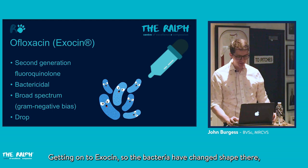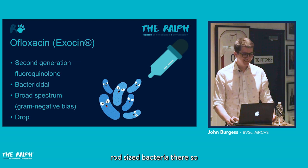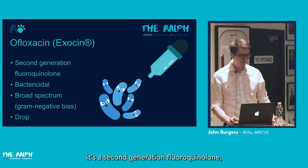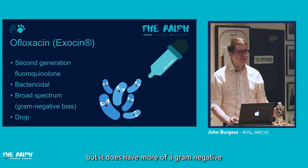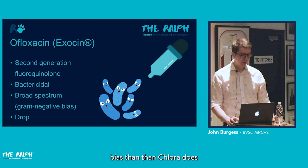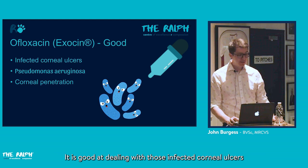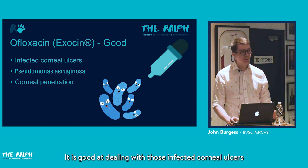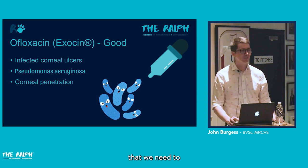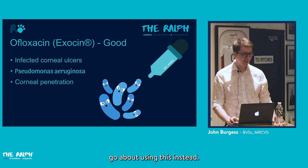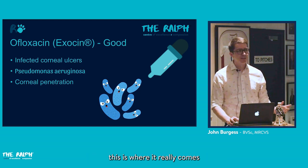Ofloxacin, trade name Exocin, is a second-generation fluoroquinolone bactericidal medication. It is also broad spectrum but has more of a gram-negative bias than chloramphenicol, and is mostly available as a drop formulation. It is good for infected corneal ulcers that aren't responding to chloramphenicol, often confirmed by bacterial culture.